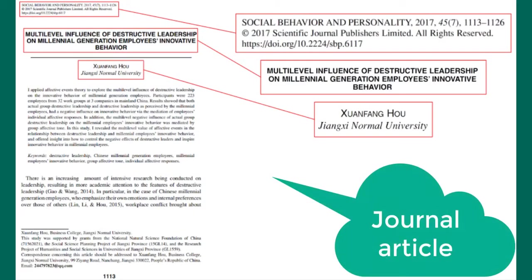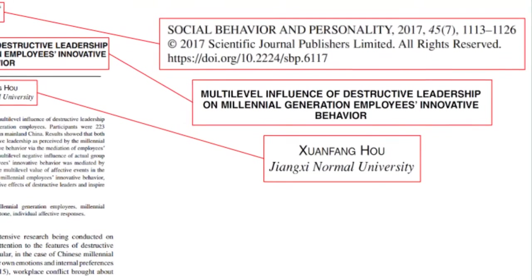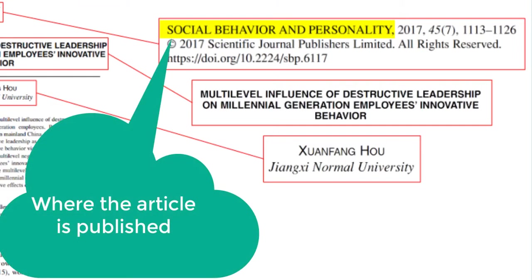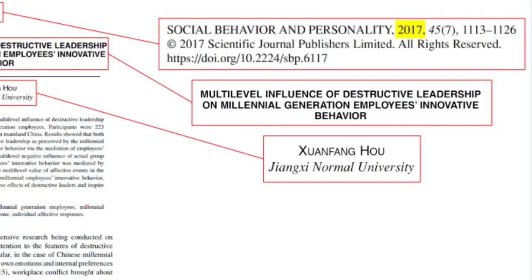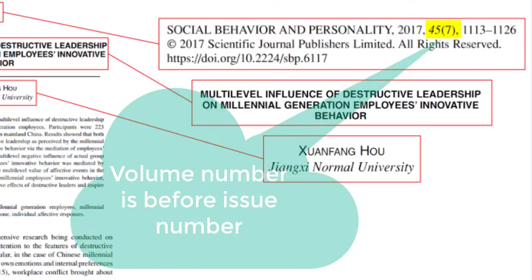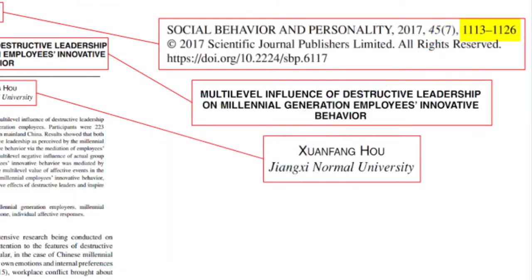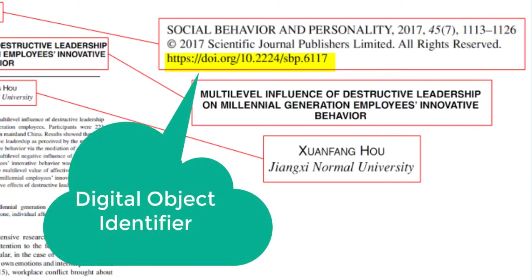First, let's identify where you will find the information needed for your citations. You'll need the title of the article and the author. Other information you need is typically at the bottom or at the top of the article. You'll see the journal title — the name of the journal where the article is published — as well as the year of publication and the volume and issue numbers, which show exactly when the article was published. The volume always comes before the issue number, and sometimes there is no issue number. You'll also need to include the page numbers and the DOI if your article has one. DOI stands for Digital Object Identifier, and it's a unique identifier specific to each article.